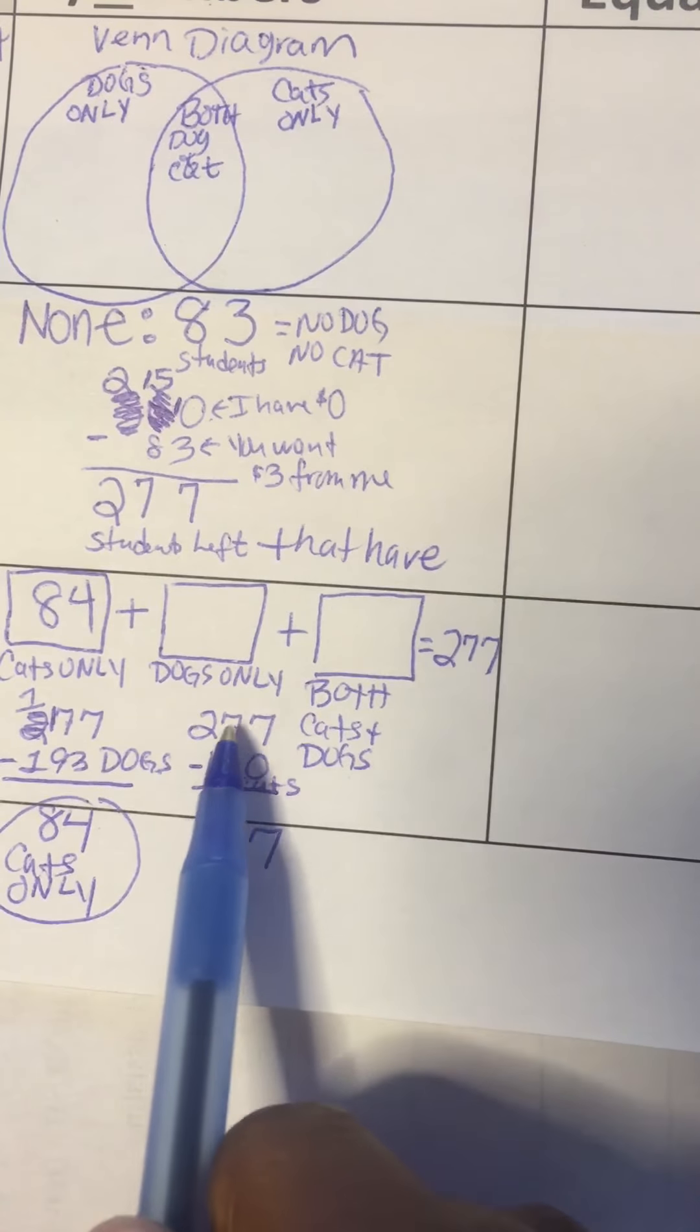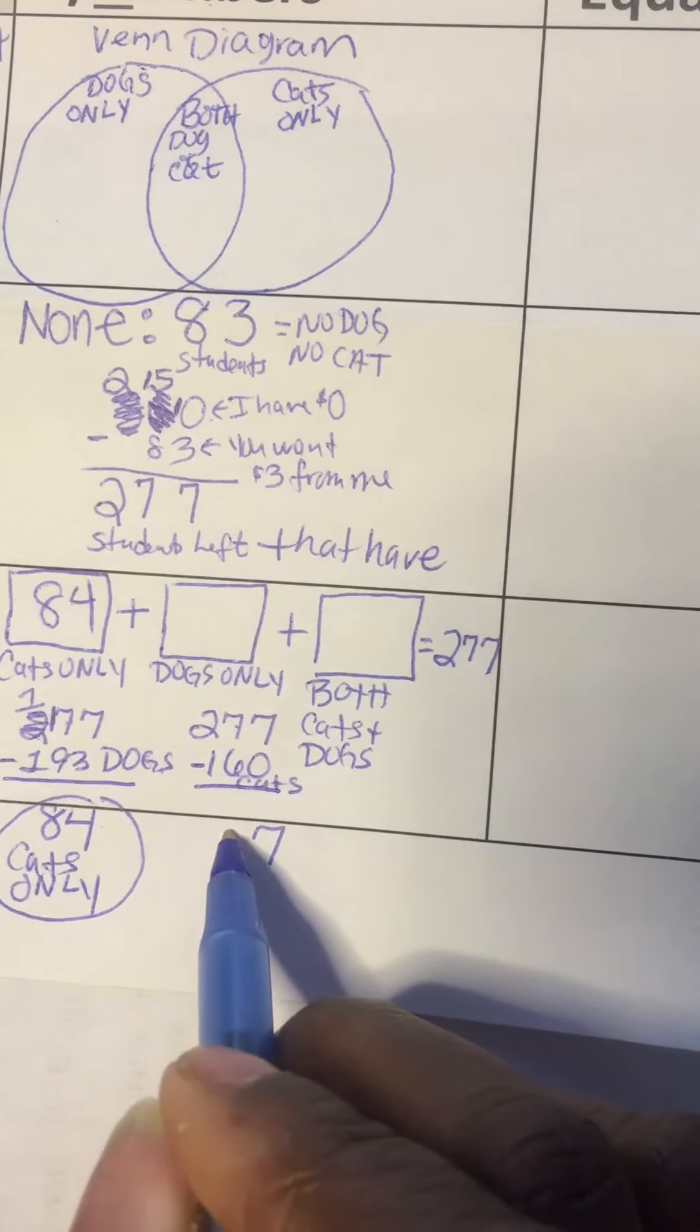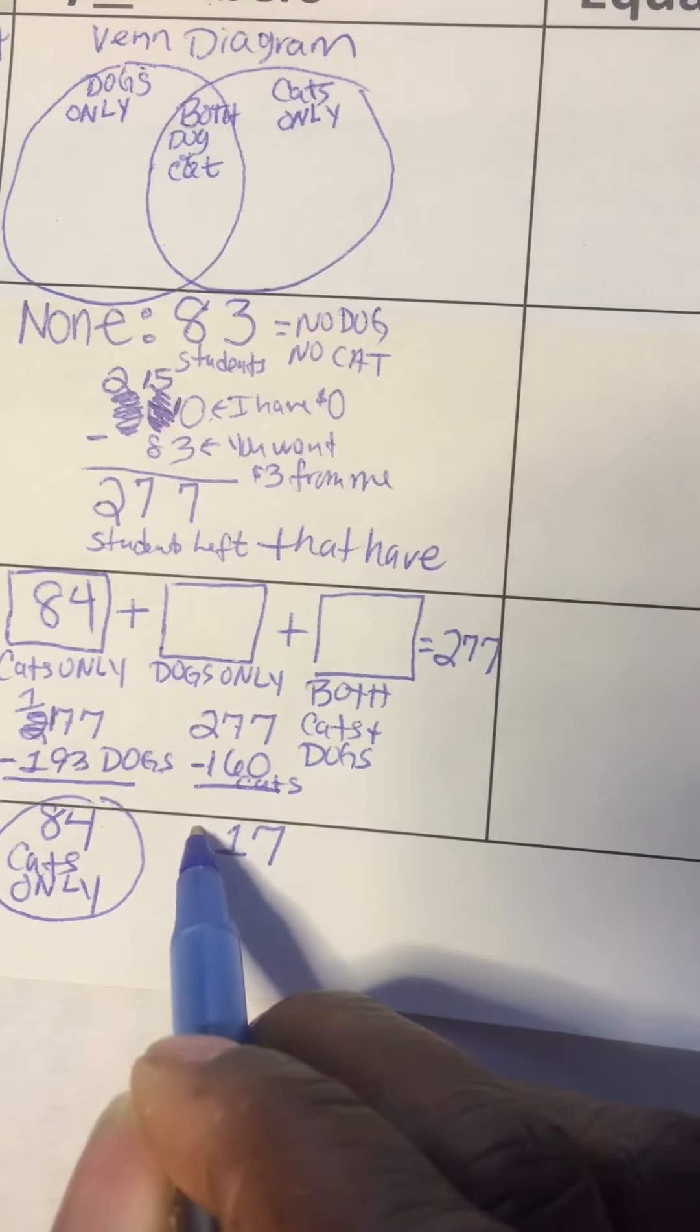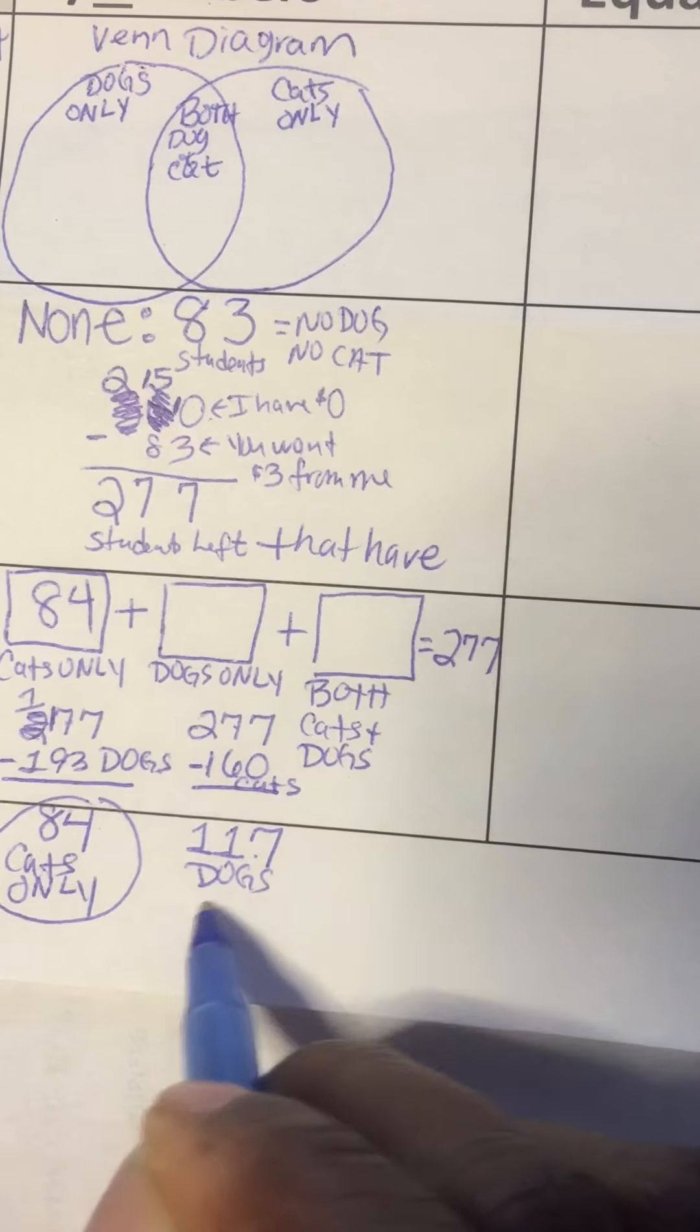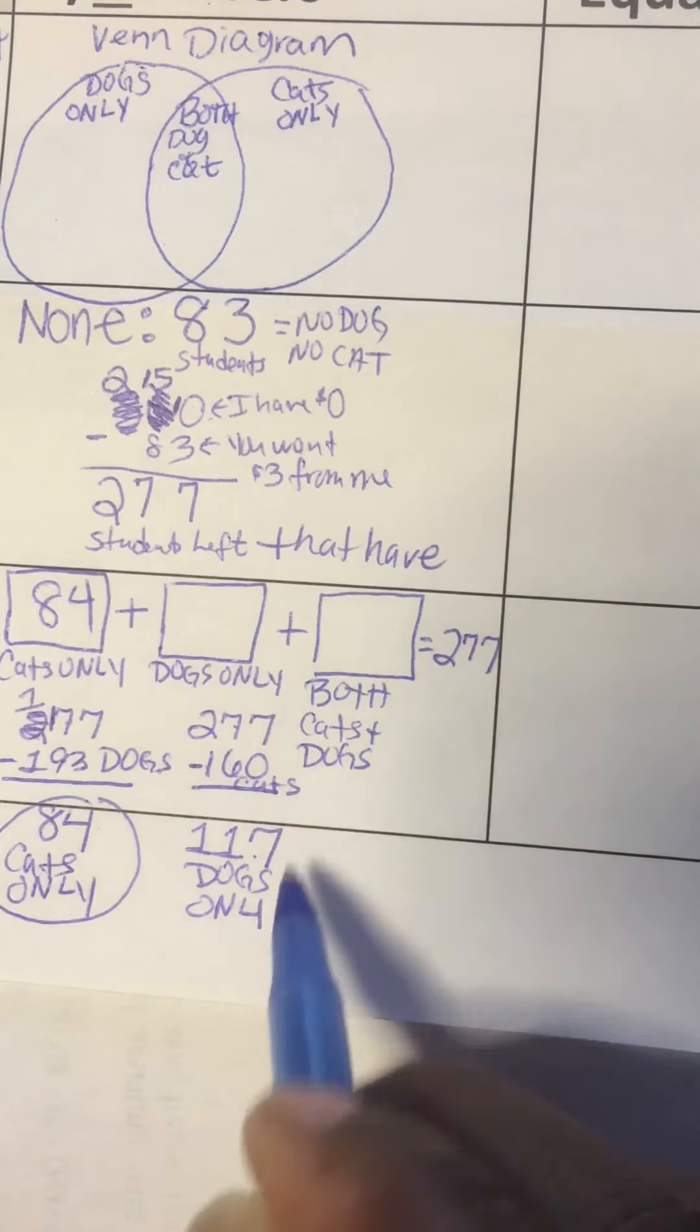7 minus 0 is 7. 7 minus 6 is 1. 2 minus 1 is 1. So 117 represent dogs only.